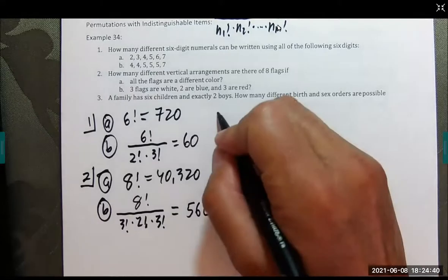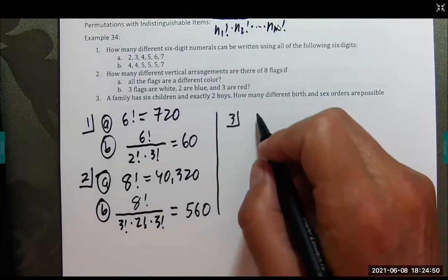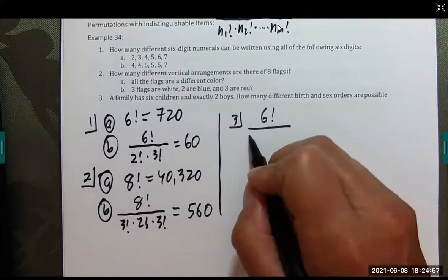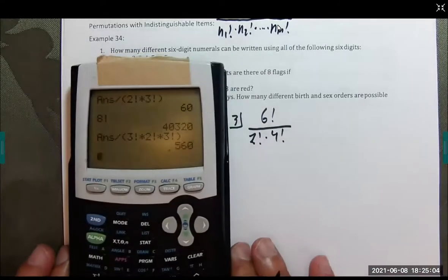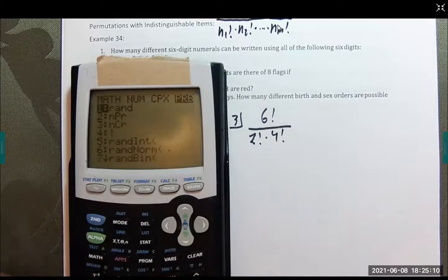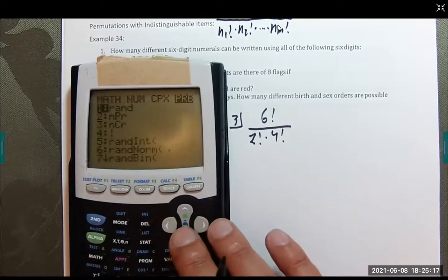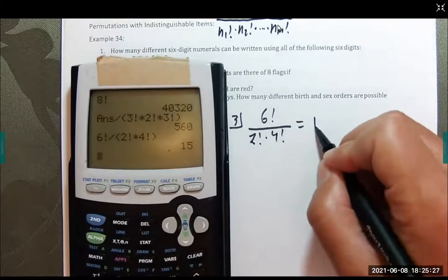Number 3: a family has six children and exactly two boys. How many different birth-order arrangements are possible? That's 6 factorial divided by (2 factorial times 4 factorial), since two boys means four girls. This gives us 15 different arrangements.